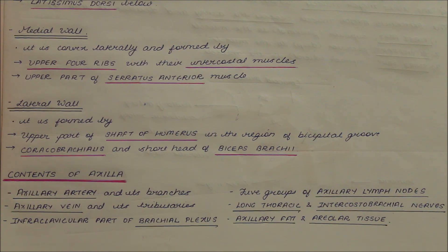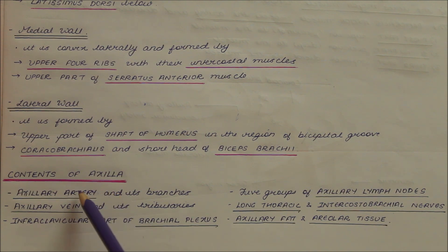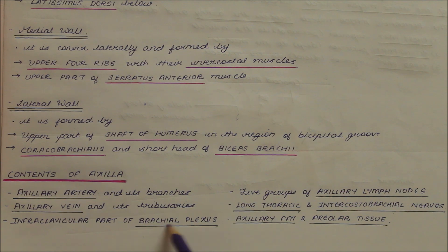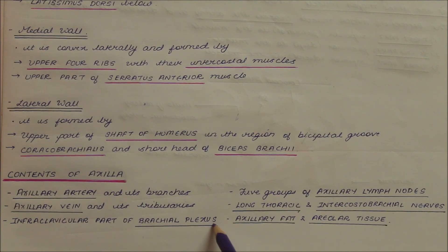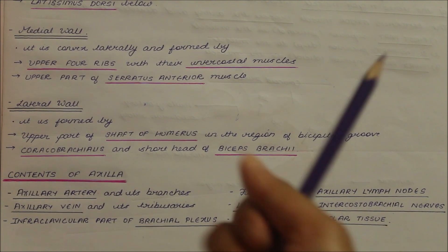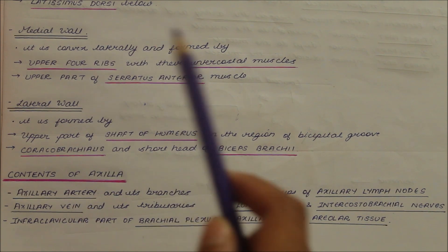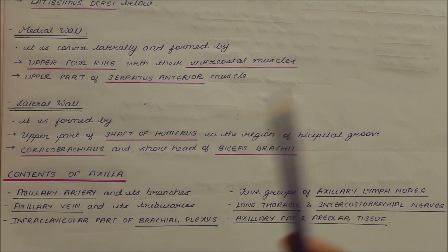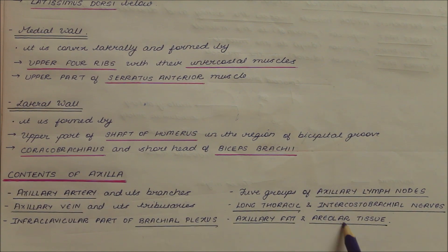We can remember this using an organized perspective. First, the vascular structures: the axillary artery and axillary vein. Then the nervous system structures: the long thoracic and intercostal brachial nerves, and the infraclavicular part of the brachial plexus. Then the lymph nodes: five groups of axillary lymph nodes. Finally, the axillary fat and areolar tissue.